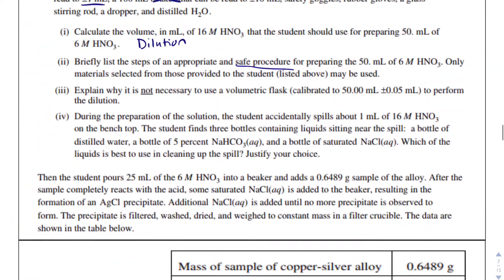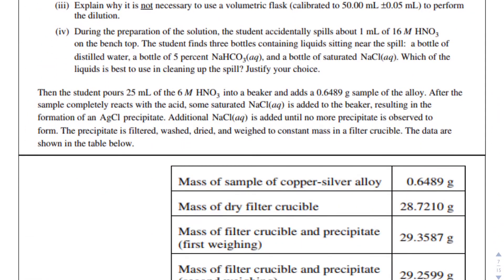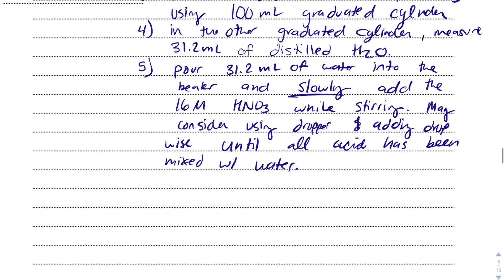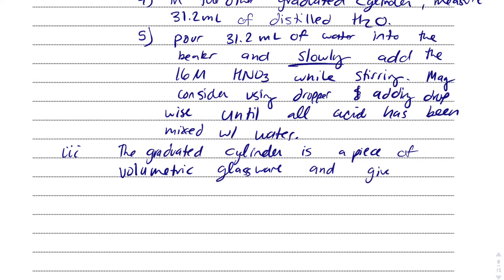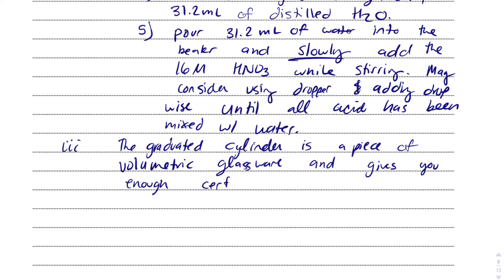That one was kind of a long one. On the AP test, we don't want to take too long on any one question. In part three, it says explain why it's not necessary to use a volumetric flask calibrated to 50 milliliters to perform the dilution. The answer to that is very simple. A graduated cylinder is a piece of volumetric glassware and gives you enough certainty in the measurements.